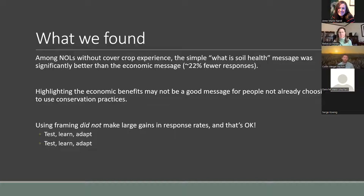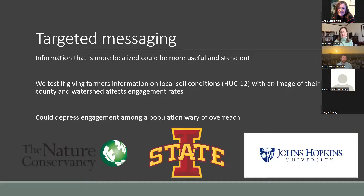We got a cautionary tale about that economic message. Even though we didn't find something amazing, that's okay. We need to test, learn, and adapt — repeat this over and over. There may be other strategies that would be more effective for engaging folks. What about targeted messaging? For farmers in Iowa in high erosion areas along the eastern side of Iowa, we tested localized versus state-level information. Local information could be more useful — it gives farmers more to act on or helps the message stand out, since farmers receive an enormous amount of advertising in the mail.